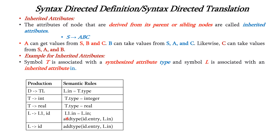L1 inherits the value of L, meaning L dot in inherits the data type T. So whatever data type applies to L also applies to L1. The purpose of add type is that whenever a variable is declared, its name and its data type are recorded into the symbol table. So add type of id dot entry and L dot in means we are entering the identifier as well as its type into the symbol table. The type is mentioned in L dot in, which is the data type T. The same applies when L tends to id — we enter the identifier into the symbol table along with the data type.